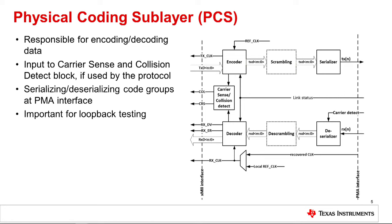The PCS supports low power mode, if implemented, by processing idle code groups. The receive path of the PCS takes in data from the PMA interface and basically reverses the processing that the PCS in the sending node applied to the data. It decodes the received code groups to the original packet bits. Based on either the success or failure of proper data decode and recovery, the receive block will either assert an RXDV signal to indicate it is forwarding valid data to the MAC, or an RXER signal to indicate it has detected an error in the data. The PHY's clock recovery function is used to synchronize its receiver bit clock to the transmitting PHY's bit clock. In some versions of IEEE 802.3 standard, additional scrambling is applied to the data.